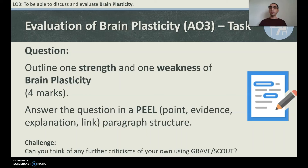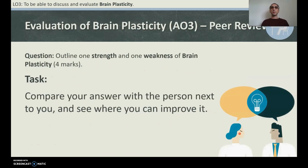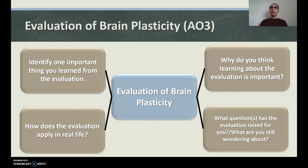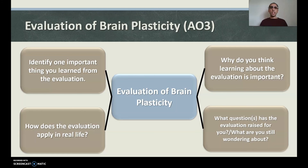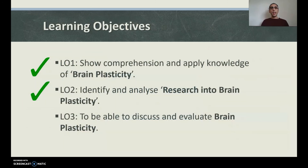Challenge: Can you think of any further criticisms of your own, or look in the textbook? Reflection: Identify one thing you learned from the evaluation. Why is learning about the evaluation important? How does it apply in real life? It gives us a better understanding and shows that learning about brain plasticity is helpful in everyday life, especially when working with people with brain injuries. What questions has the evaluation raised for you? Learning Objective 3 — discuss and evaluate brain plasticity — tick it off.